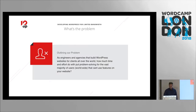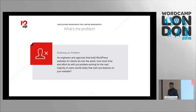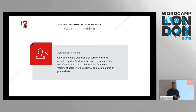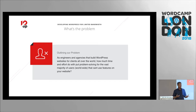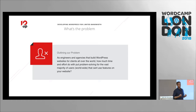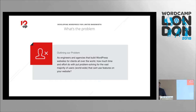So what is our problem here today? As engineers and agencies that build WordPress websites for clients from all over the world, how much time and effort do we put into problem-solving for the vast majority of users worldwide who can actually use our features? It's quite a tricky thing, especially from a front-end perspective when we're building features like Parallax — a very heavily-driven feature we add to websites expecting everybody to be able to use and absorb it. But when it comes to building websites for people that can't access it, are we actually thinking about those scenarios? It's not really a mindset that a lot of developers truly think about.